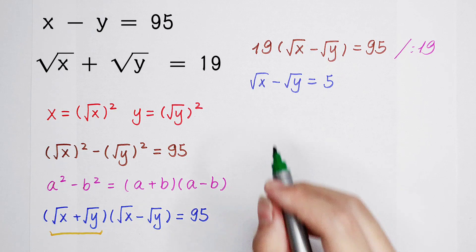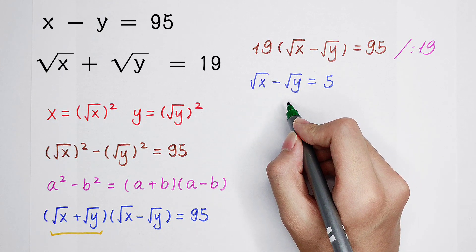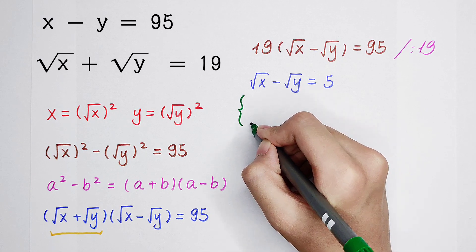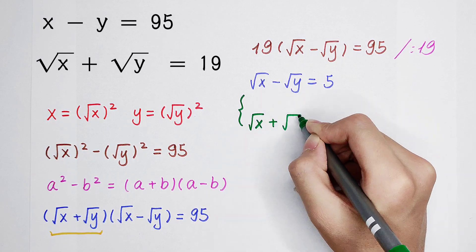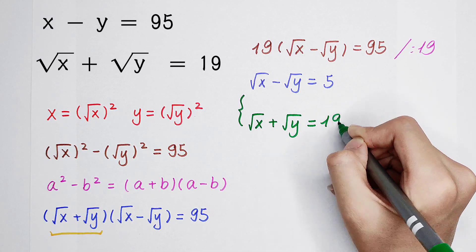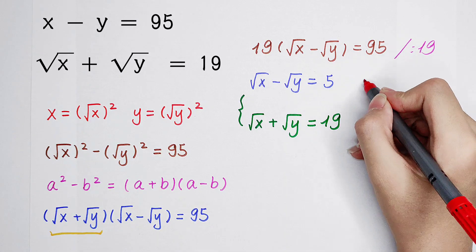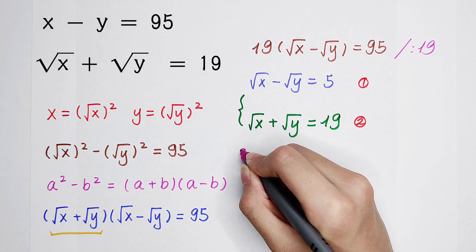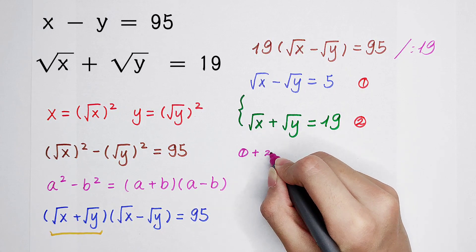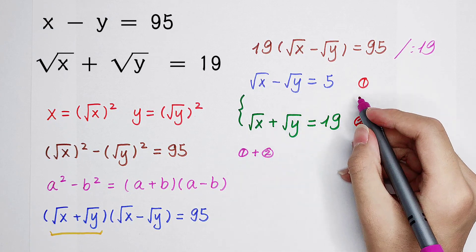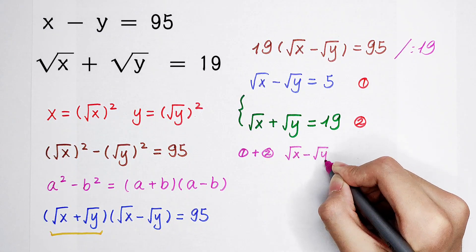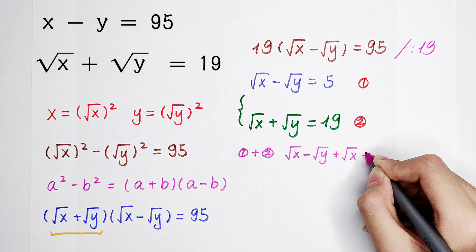Now we know the value of the subtraction of square root of x and square root of y, which is 5. We also know the sum of them, which is 19. This gives us two equations. To find the value of x, we add the two equations: square root of x minus square root of y, plus square root of x plus square root of y.